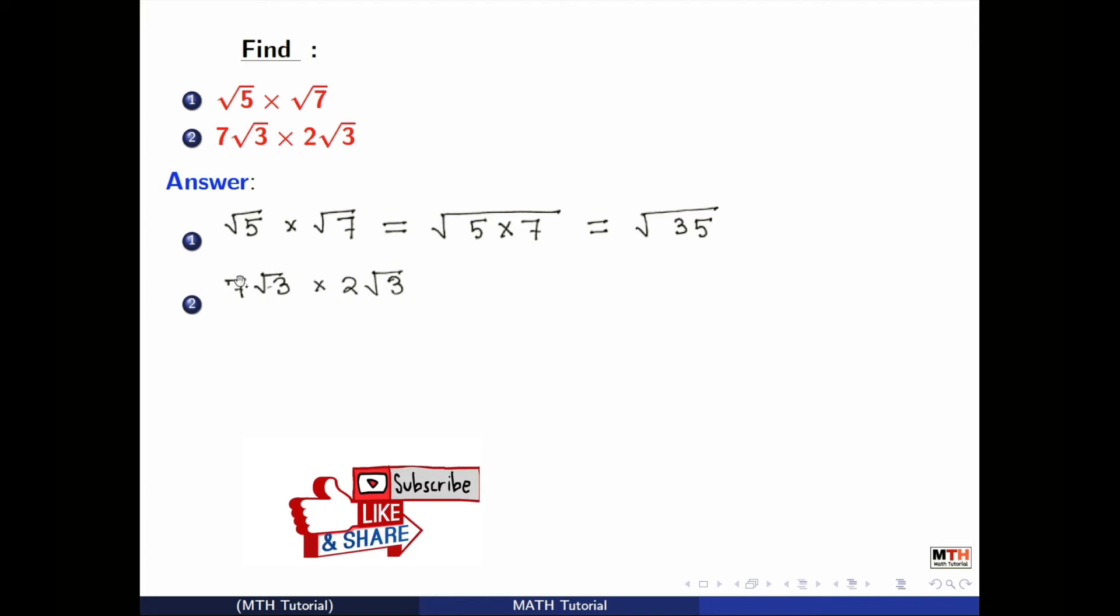We have 7 root 3 times 2 root 3 here. In order to multiply it we will first take the rational numbers at first. So write it 7 times 2 and then we will multiply the remaining numbers that is square root of 3 times square root of 3.